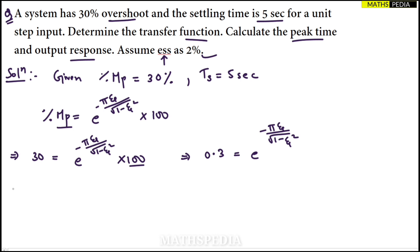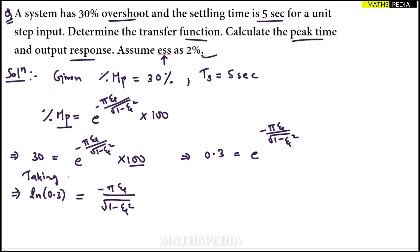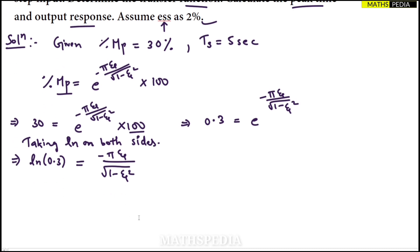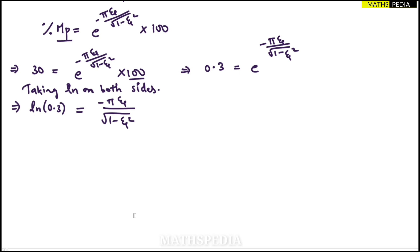To remove the exponential, we take the natural log on both sides. When we take ln, the exponential disappears and we are left with: ln(0.3) = −π·ζ / √(1−ζ²). We need to solve this to find the damping ratio ζ.